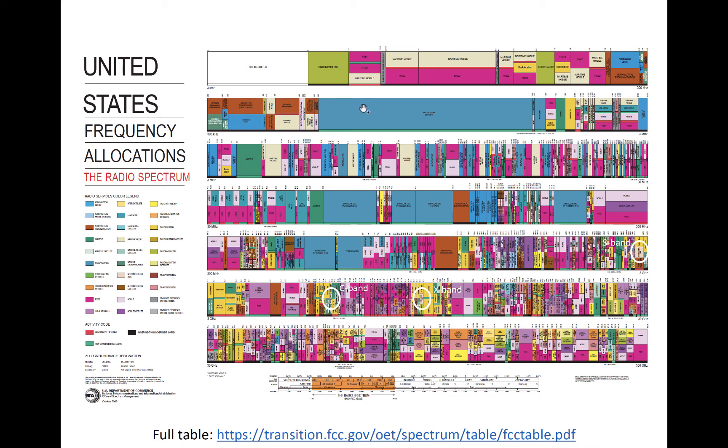Broad swaths are reserved for radio and TV broadcasting, particularly less than 800 MHz. At higher frequencies, allocations tend to be narrower.